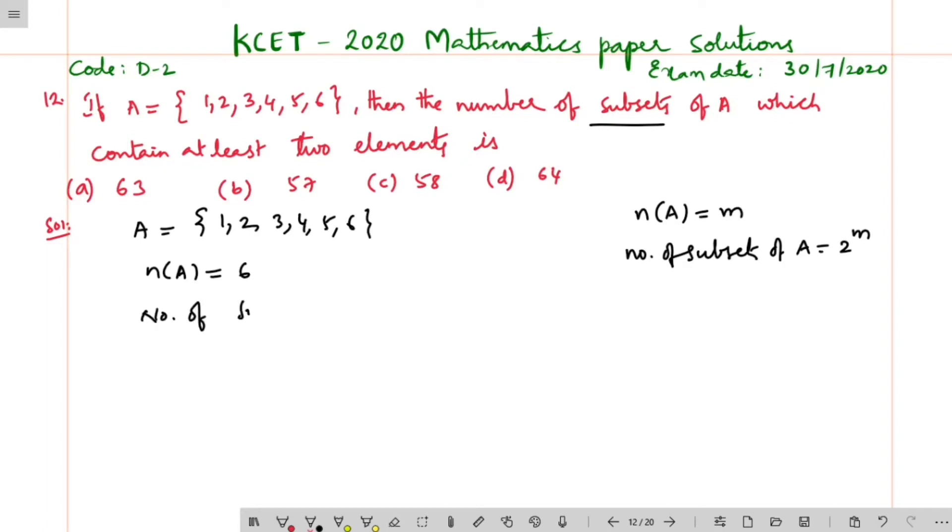Total number of subsets of A is equal to 2 to the power of 6, that is 64, but with a condition is given which contain at least two elements.